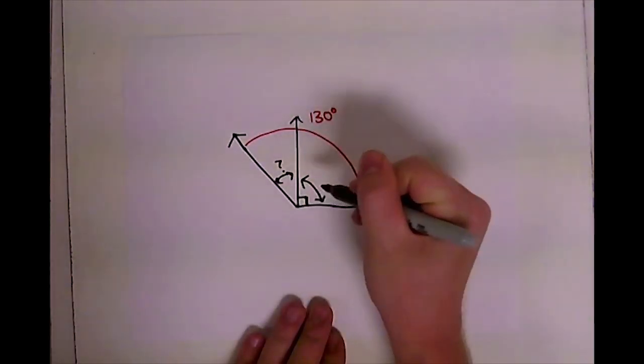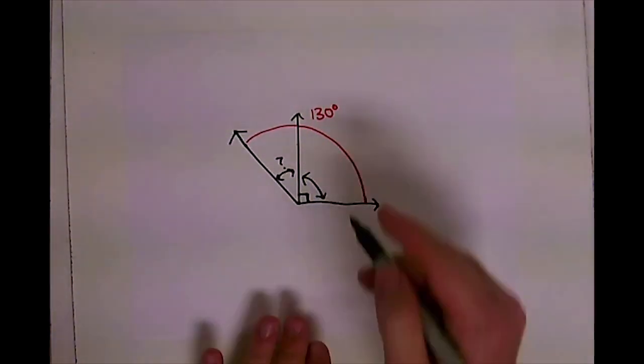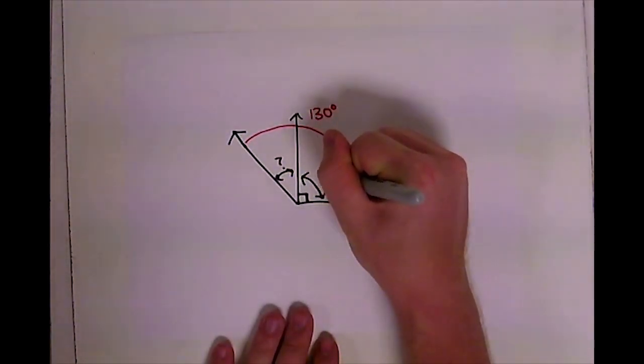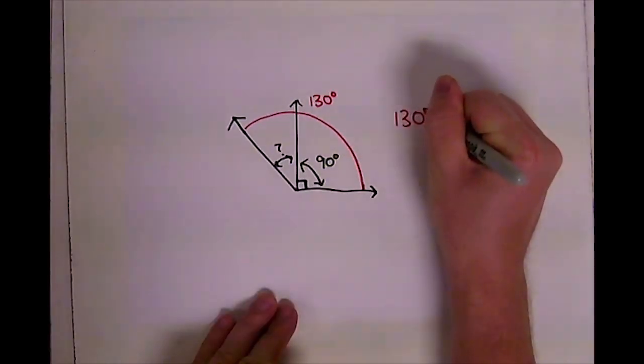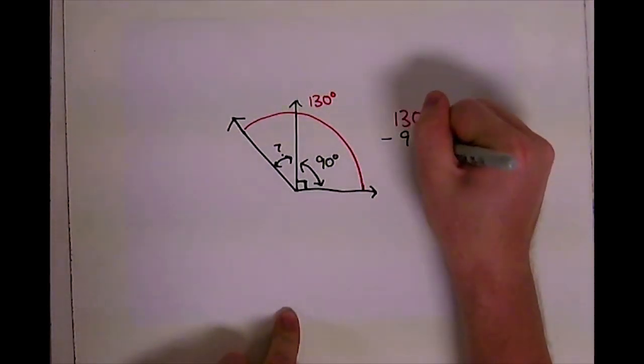Well, there's that little square that I see most often whenever I see a right angle. Sometimes they won't show that. Sometimes they will. But whenever you see that, you know that it is 90 degrees. So I'm going to get my 130 and I'm going to subtract my 90.